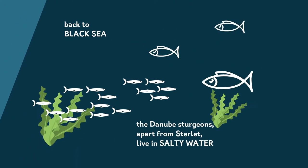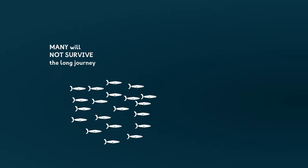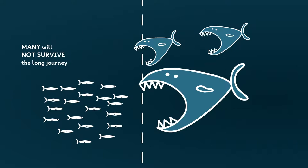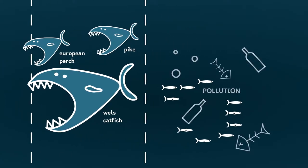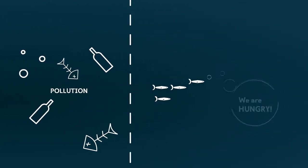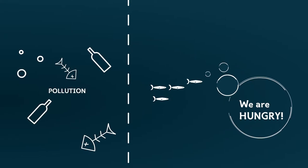You remember that the Danube sturgeons, apart from sterlet, live in salty water. Unfortunately, many of the newly hatched fish will not survive the long journey. They may turn into food for predatory fish like the European perch, the wels catfish, or the pike. They may not survive in the polluted waters. And then, don't imagine that dinner is waiting for them all ready and served. Oh look, some small sturgeons coming this way, let's help and feed them. No, no way. They have to fight for their food.